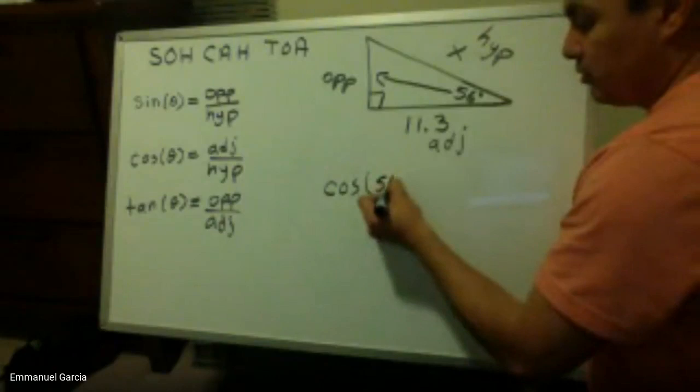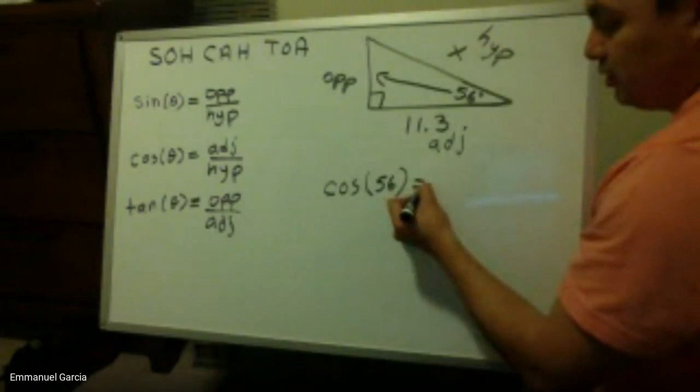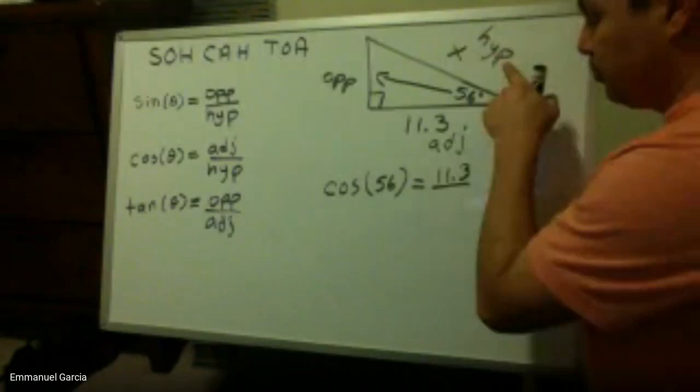And I already know my angle. I'm given the angle already. My cosine of 56 degrees equals my adjacent side which is 11.3 divided by my hypotenuse, which I don't know so I know it's an x value I need to find.